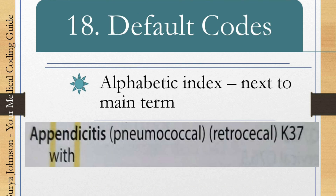Convention 18 is default codes. In the alphabetical index, the default code is listed next to the main term. For example, the default code for appendicitis is K37. Whenever there is an appendicitis, you don't have to think about whether it is acute, chronic, pneumococcal, or retrocecal — it is simply K37. Whatever documentation the doctor provides with various descriptive words, if it's just appendicitis, it has only one code. This is the default code — it will not confuse you.